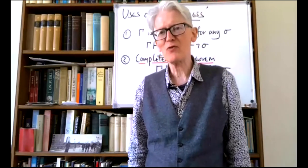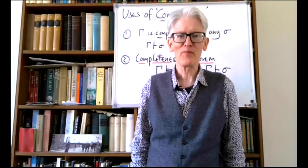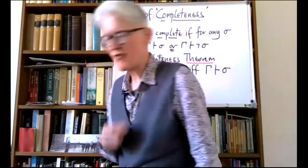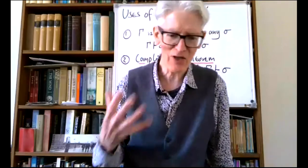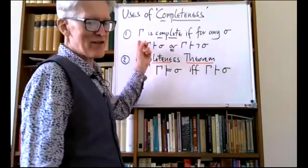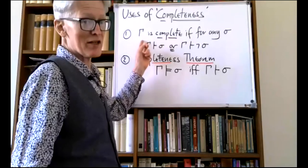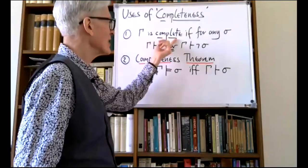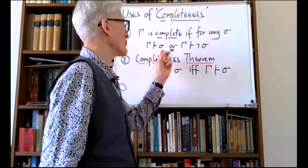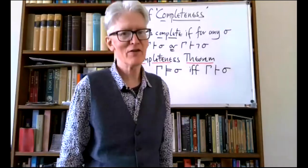It's a little bit confusing because the word 'completeness' gets so many uses in logic. We'll have three principal uses of the word completeness. We say a set of sentences gamma — a theory is a set of sentences — is complete if for any formula sigma, either from gamma you can prove sigma or its negation. That's one use of the word completeness.